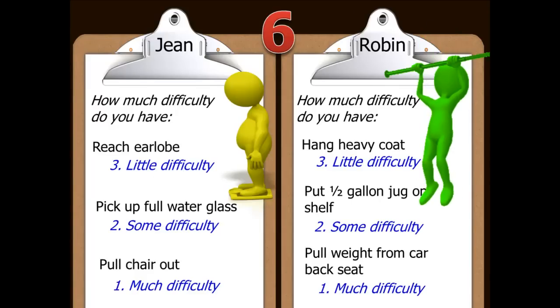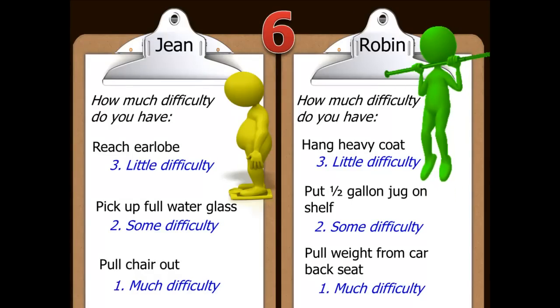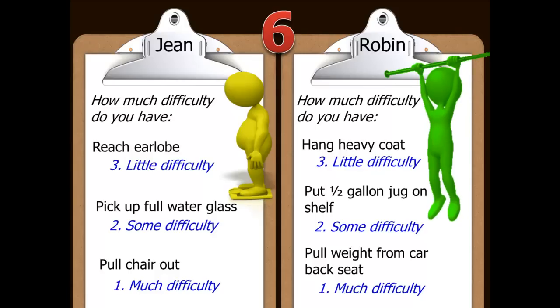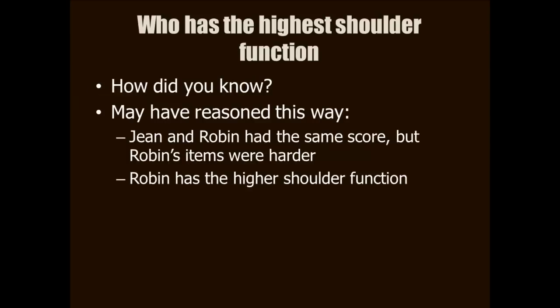Here you see Jean and Robin's answers side by side. Notice that though they were given different items, their responses were the same — they had the same response pattern. Thus, on this test of shoulder function, both Jean and Robin have a score of six. However, you can tell that one of these hypothetical persons has higher shoulder function than the other. I'm guessing that you rightly guessed that Robin has the higher shoulder function.